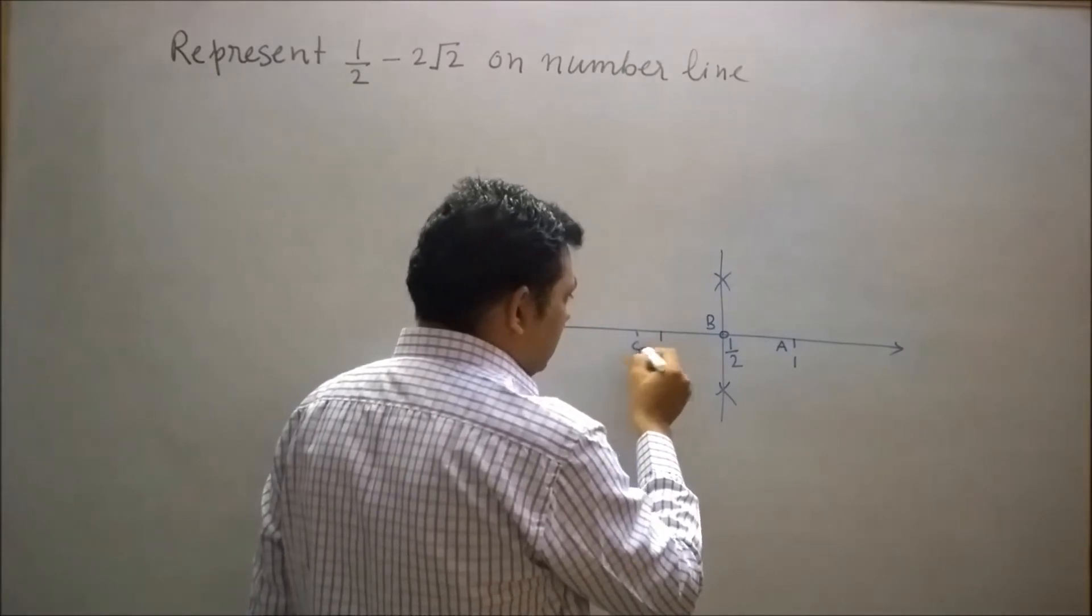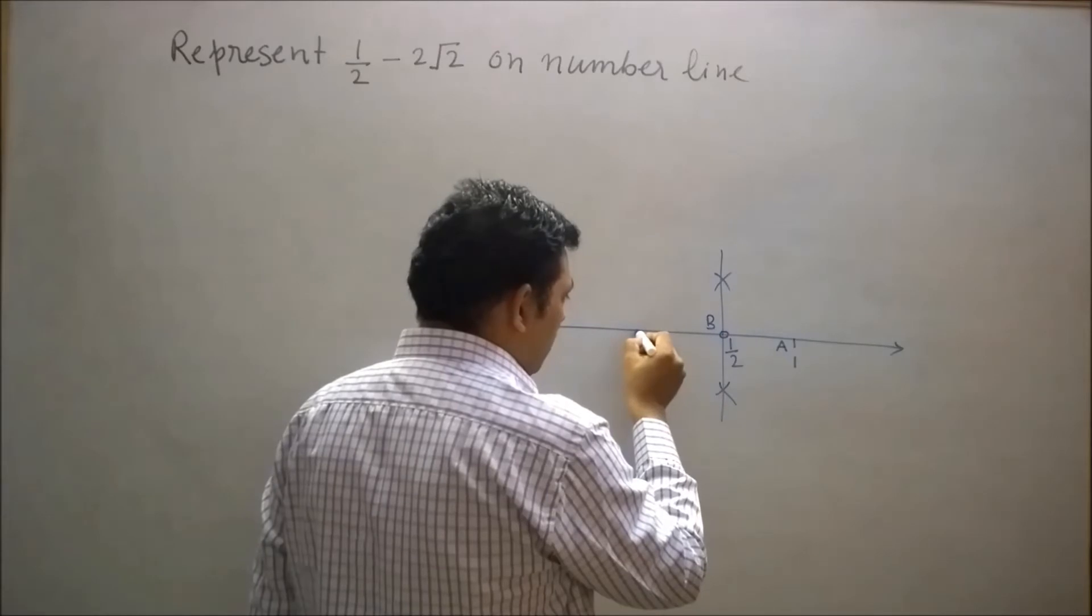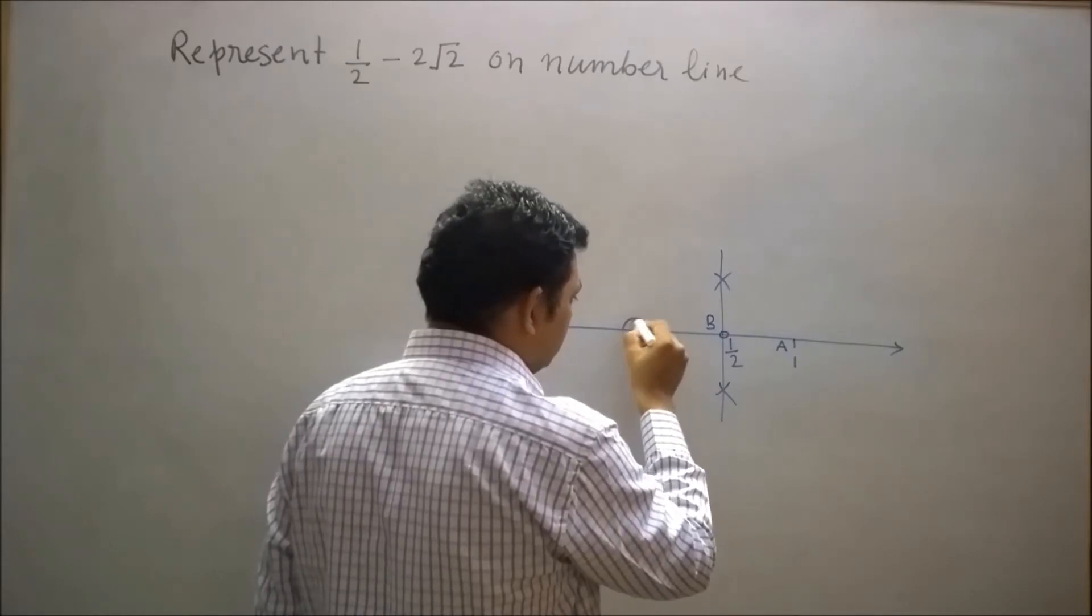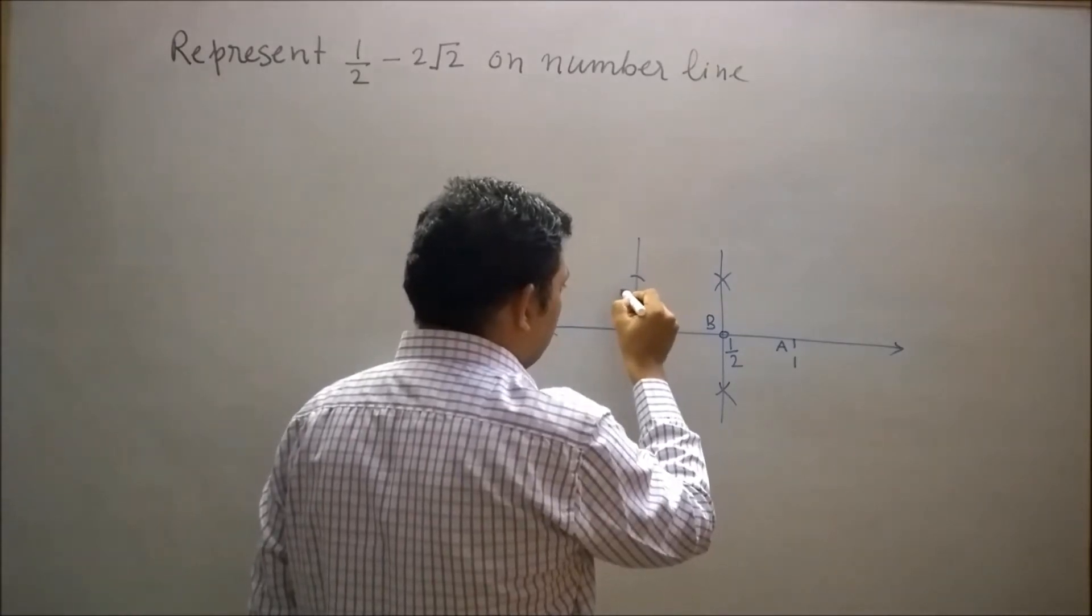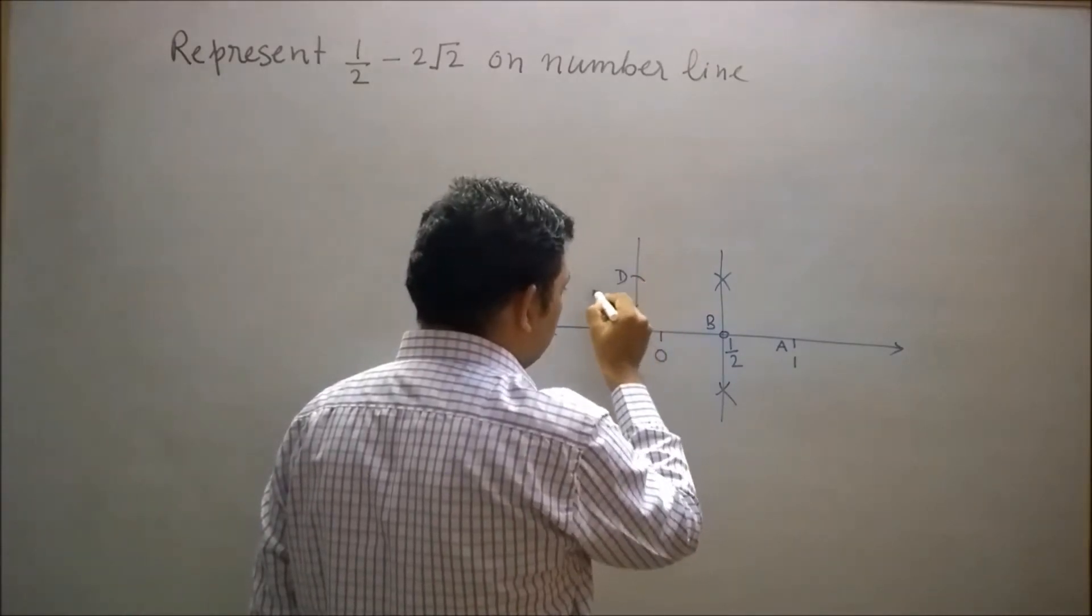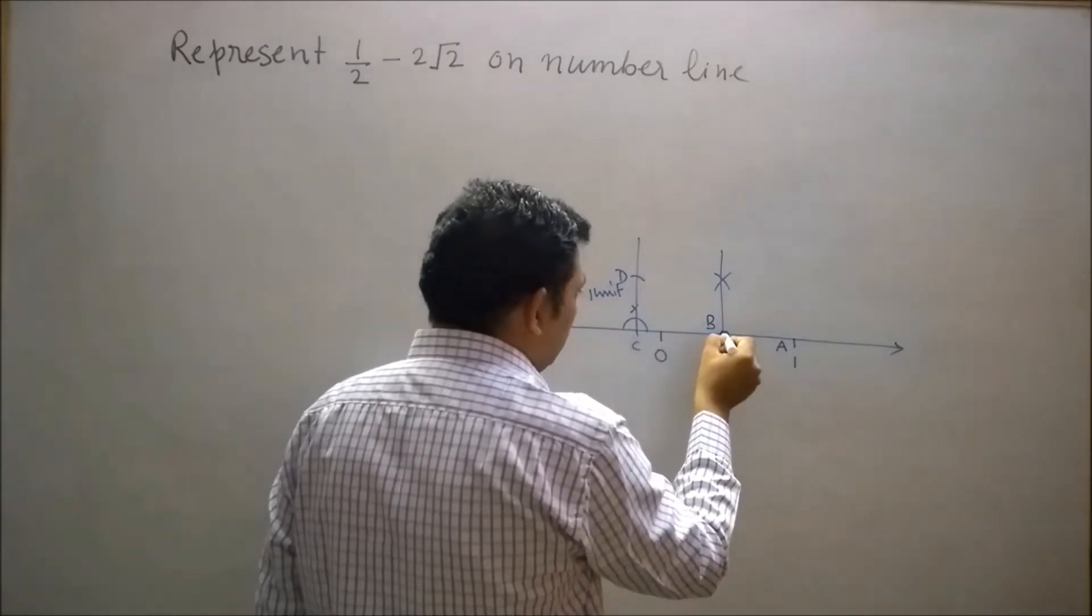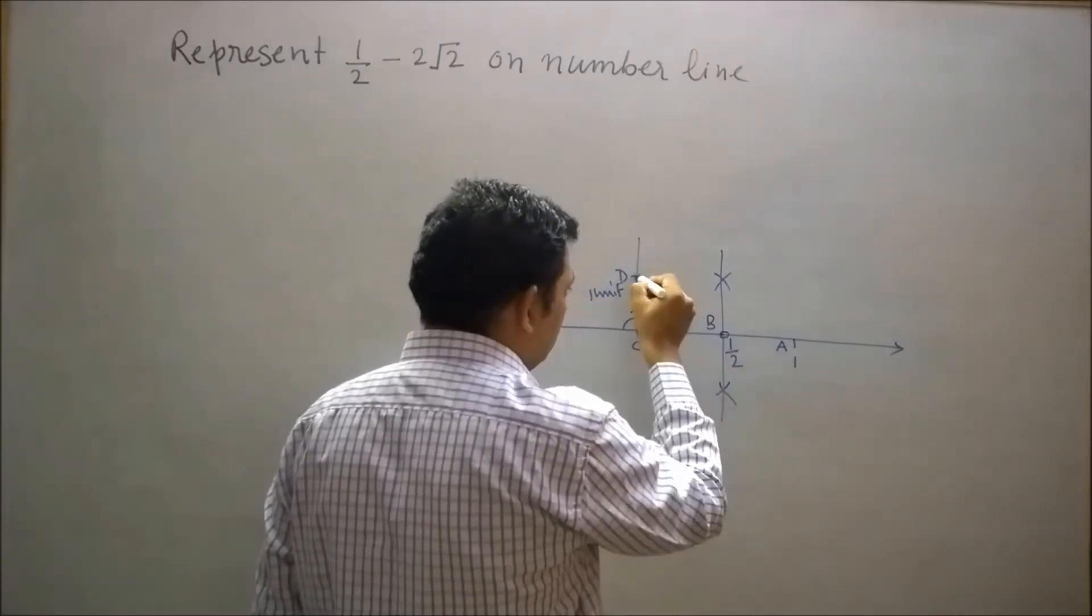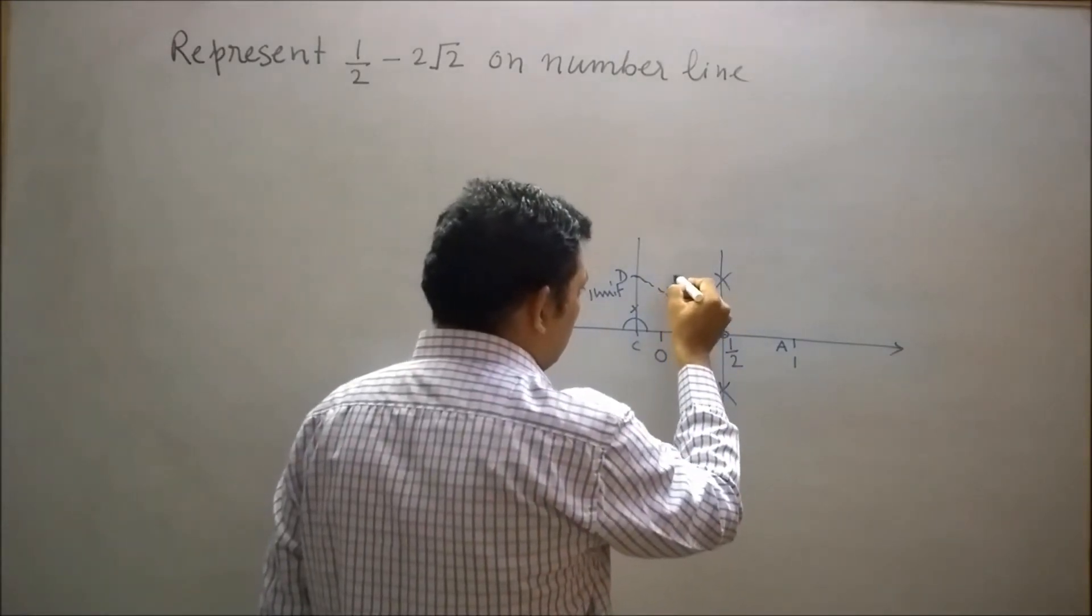Let's say C is at 1 unit distance from the point D. Now drop a perpendicular on C. Let's say this point is D and CD is 1 unit distance. Now join B to D. So this will be root 2.